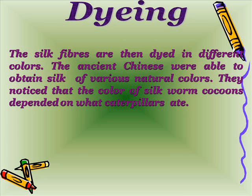Dyeing: The silk fibers are dyed in different colors. The ancient Chinese were able to obtain silk of various colors. They noticed that the color of silk from cocoons depended upon what the caterpillar ate.